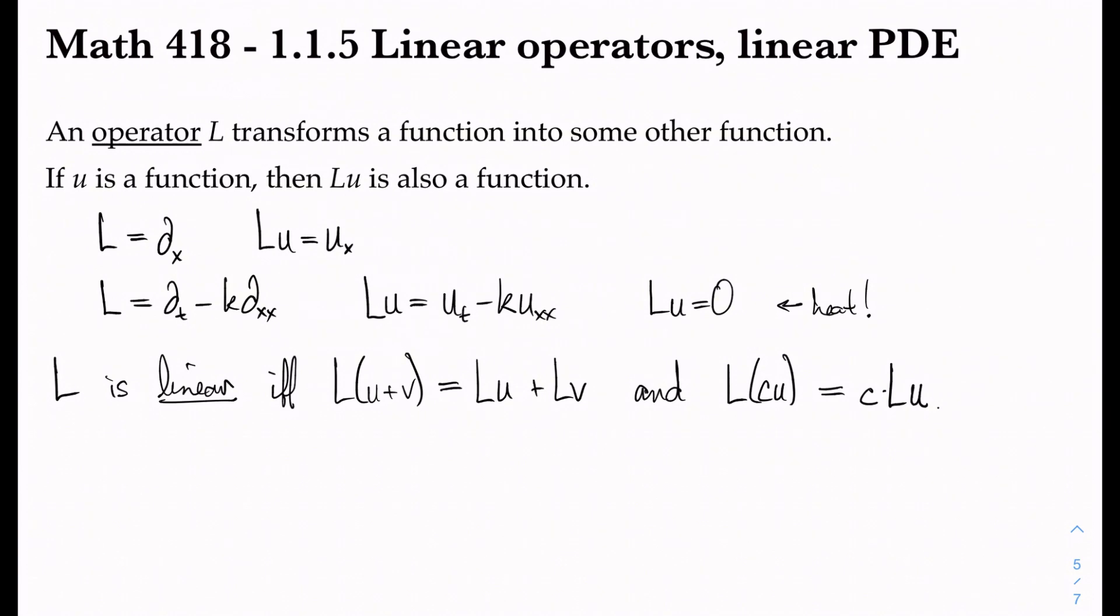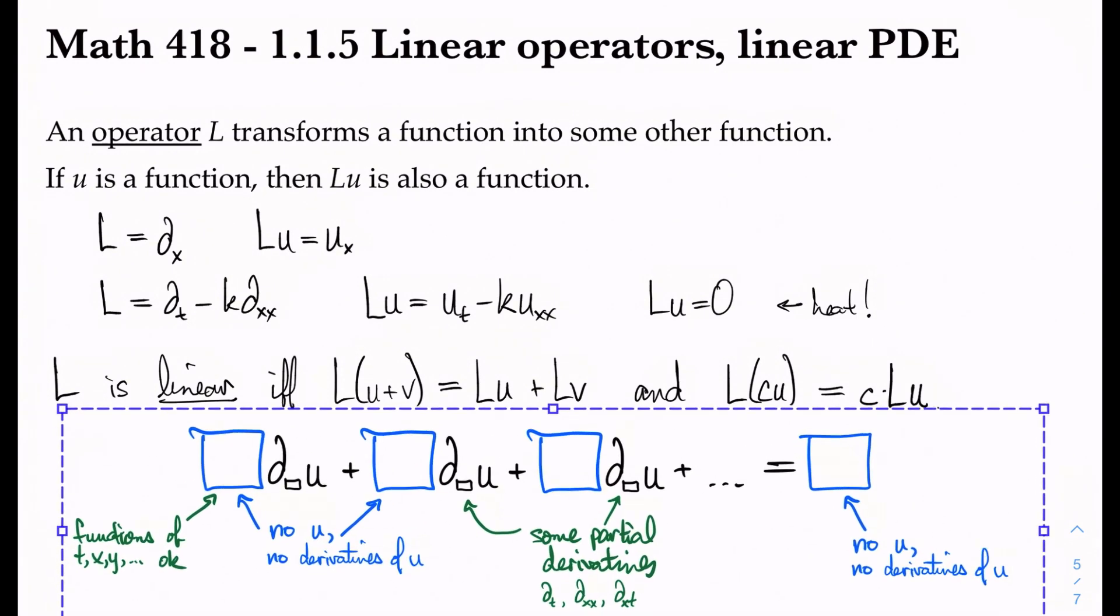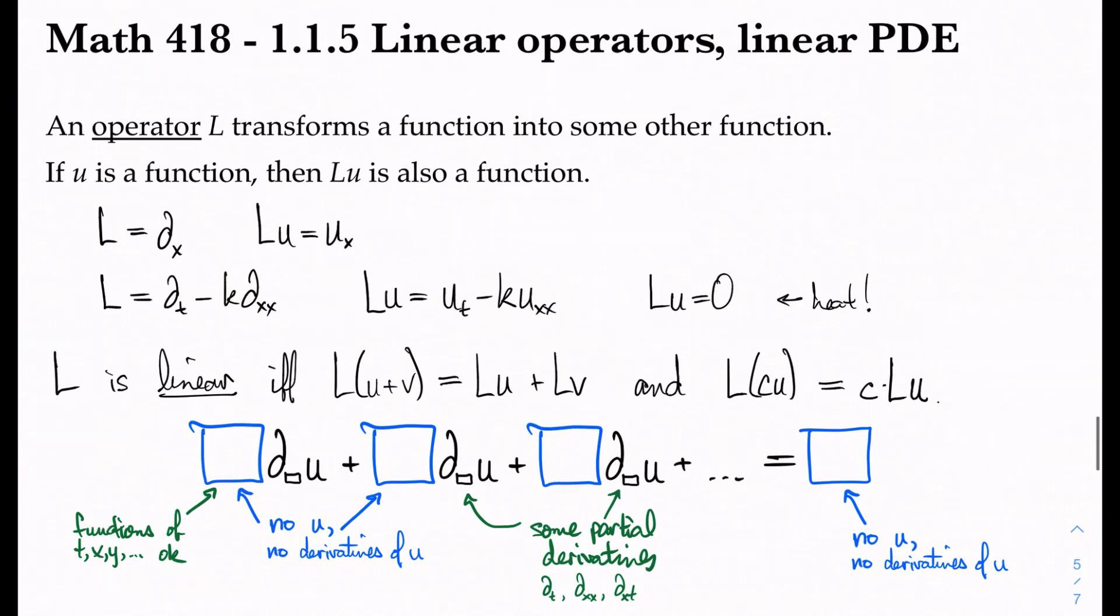And what that means practically is that a linear operator is one that can be written in this form: some partial derivatives of u multiplied by a coefficient that has no u or derivative of u's in it, just functions of the independent variables, plus another partial derivative of u that might have a coefficient function consisting of some expression involving the independent variables but not u or its derivatives, and so on and so forth. So in other words, a linear PDE is a linear combination of partial derivatives of u.